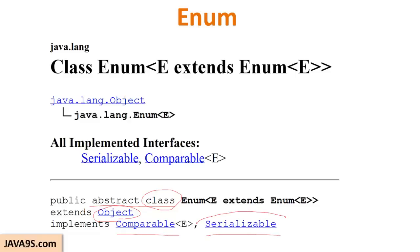Enum is declared as a class and it implements Comparable and Serializable. Because the enum class is serializable, it is very effective for a constant class that can be easily serialized, transported over a network, and deserialized. And by implementing Comparable, we have a compareTo method which helps us compare two enums if they have the same values inside them.